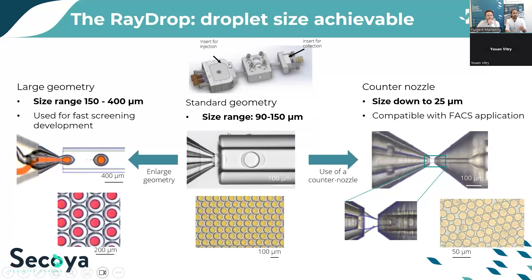Practically, the ReDrop is composed of three main elements: an insert with the injection nozzle — which can be removed and changed, for example from single emulsion to double emulsion nozzle — the body which contains the chamber, and the outlet collection capillary. The standard double emulsion geometry generates droplets from approximately 90 to 150 micrometers. To generate larger double emulsions, you simply change the double emulsion nozzle and collection capillary to bigger sizes, enabling double emulsions from 150 up to 400 micrometers.